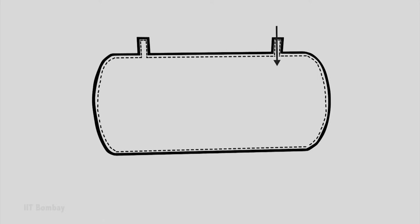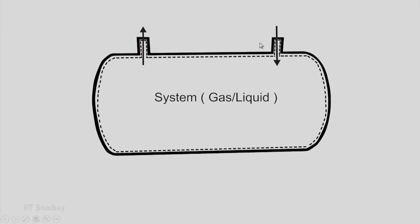We notice there is a passage here and another passage here — one could be an inflow passage, one could be an outflow passage. If the two passages are not closed, they are open, and it will be an open system. If they are closed, then our system will be a closed system.